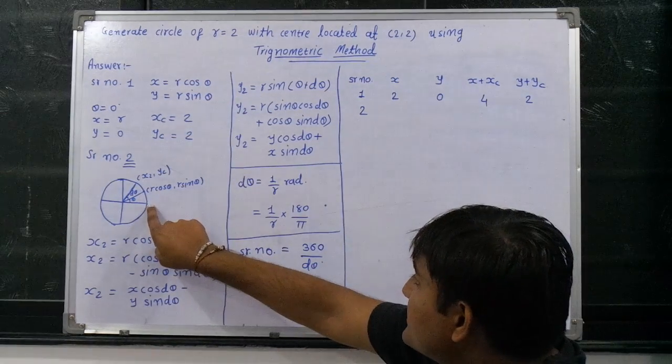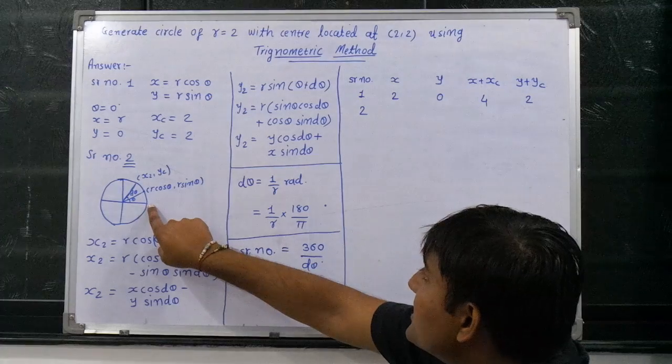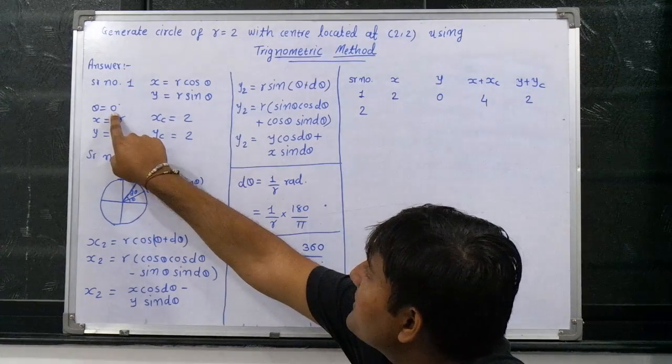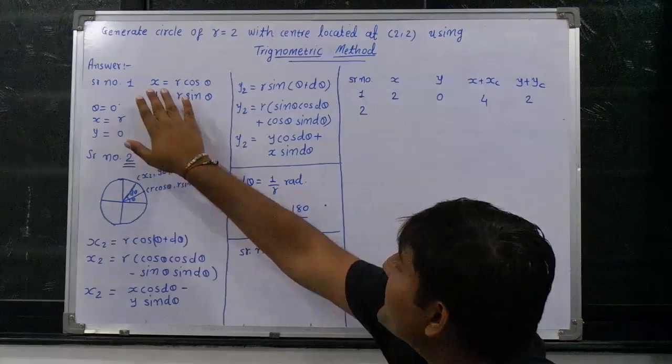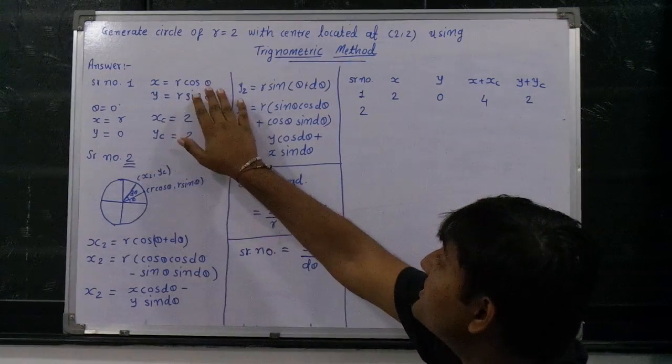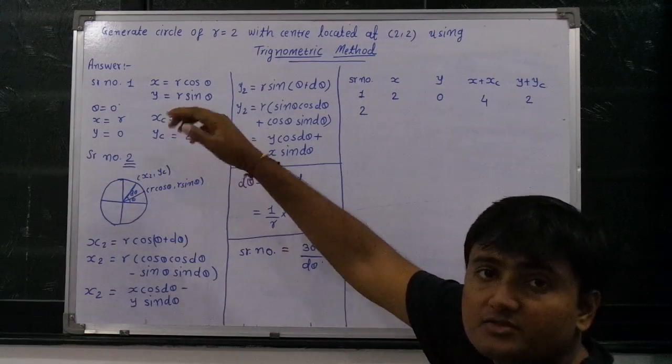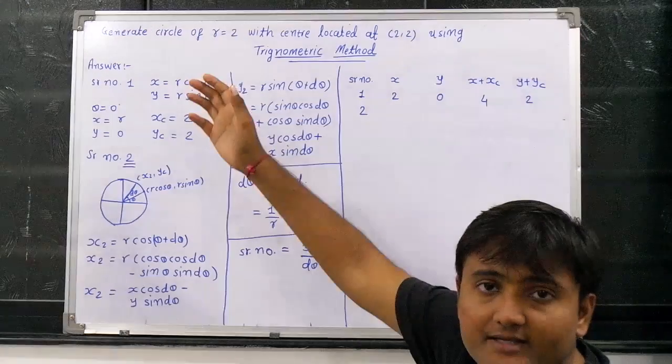At this point, suppose I am taking this point as the first point of the origin. So it will take theta is equal to 0 degrees. Theta equal to 0 degrees means x is equal to r cos 0. Cos 0 means 1, so x equals r. And y is equal to r sin 0. Sin 0 means 0, so y is equal to 0.